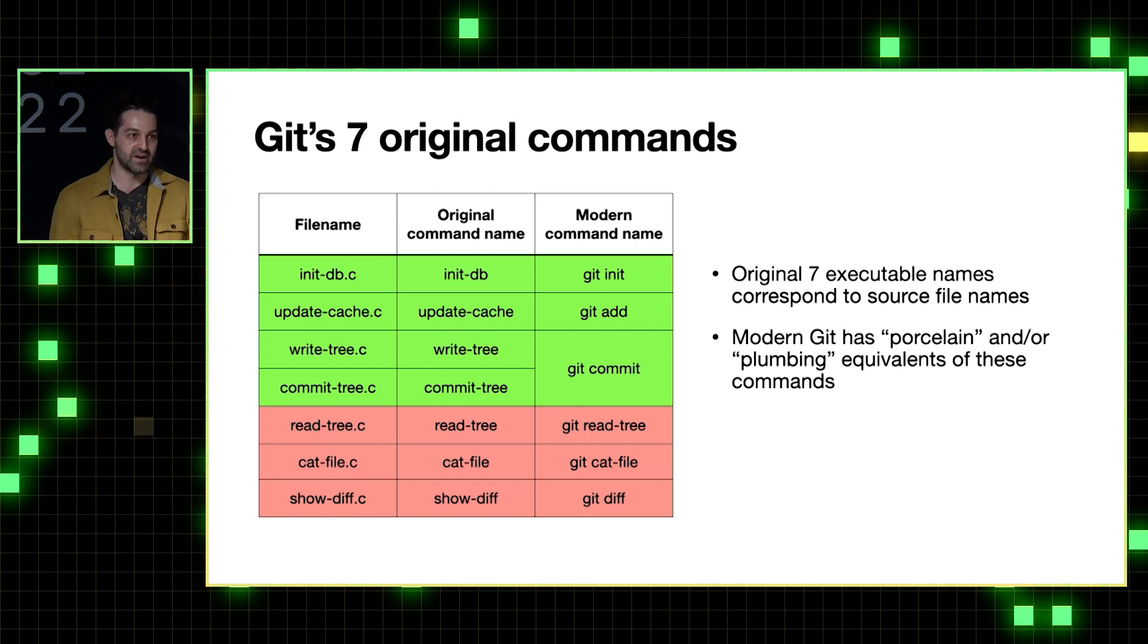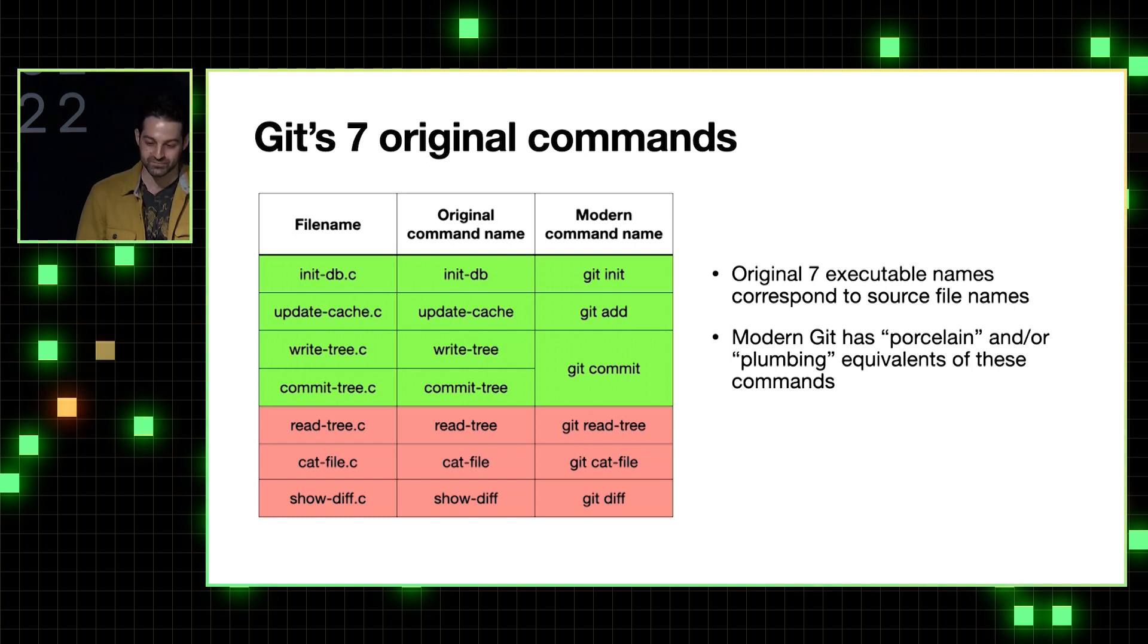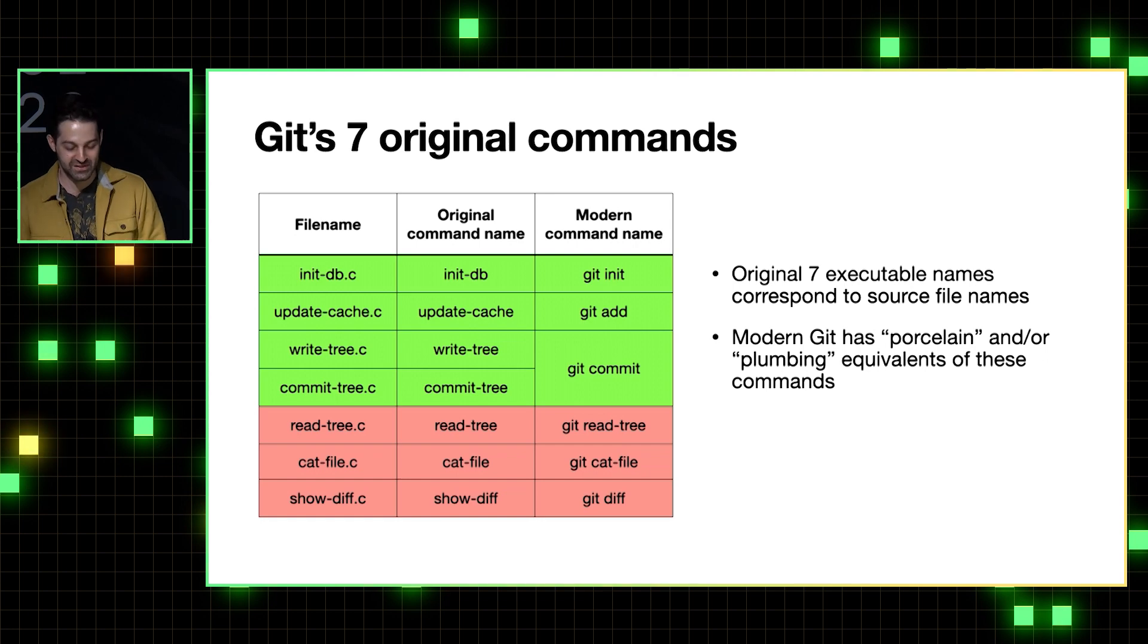which you can think of as like a predecessor to Git init. And similarly, update cache could be like a predecessor to Git add. And the combination of write tree and commit tree sort of together, you can think of as forming the original Git commit. And today we're just going to stick to talking about the files in green here, because I just don't have time to get to the ones in red.